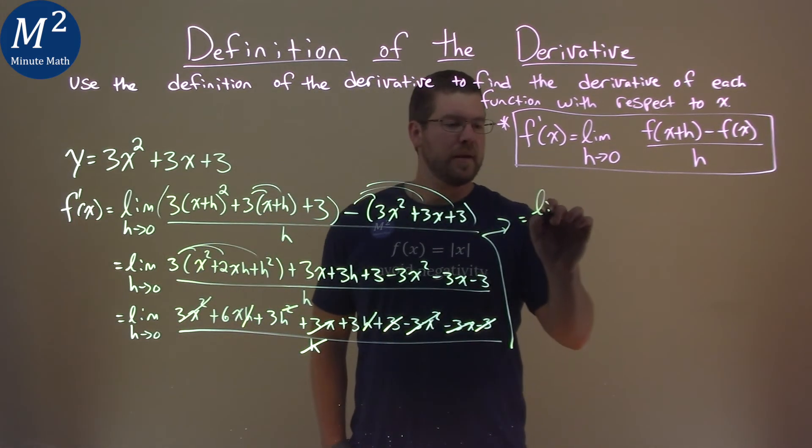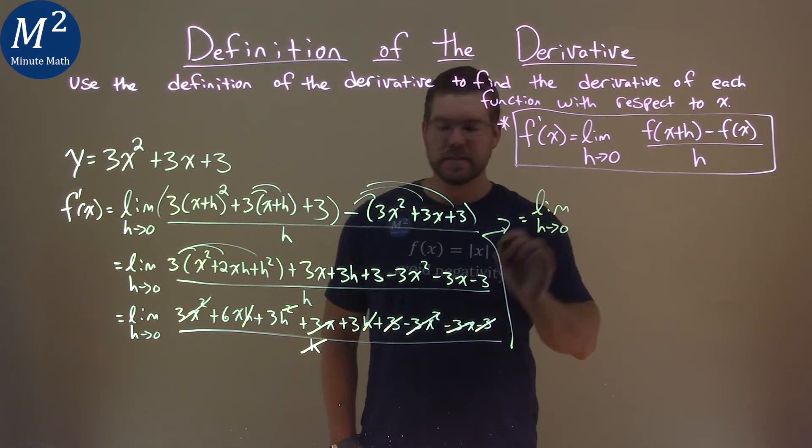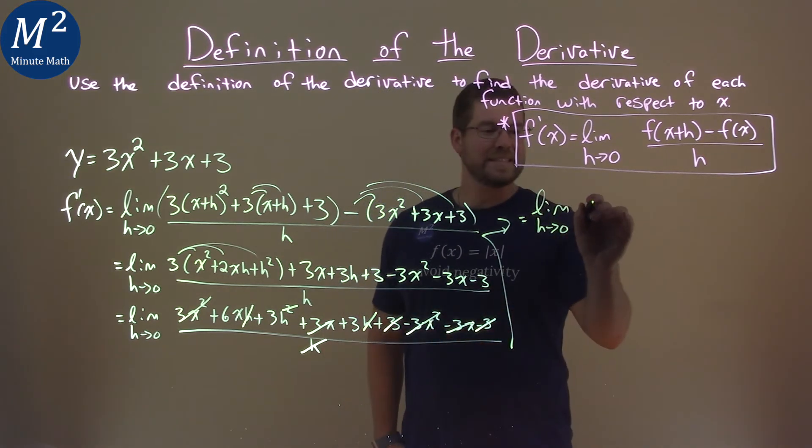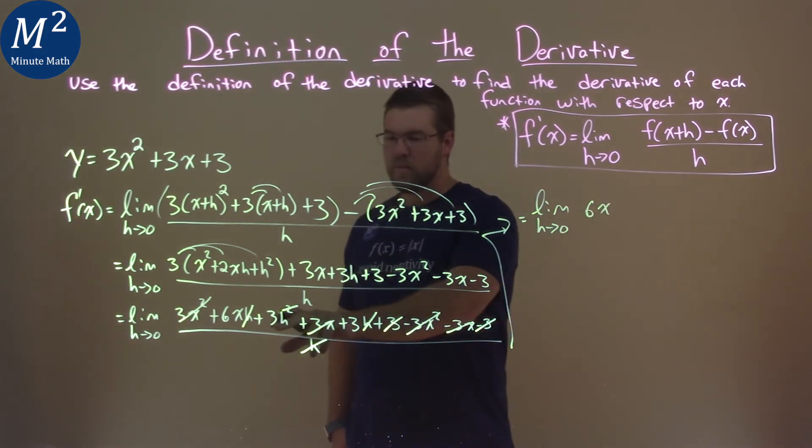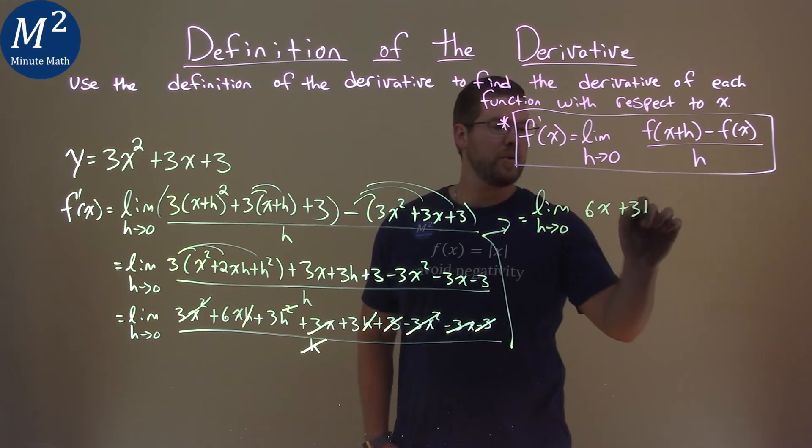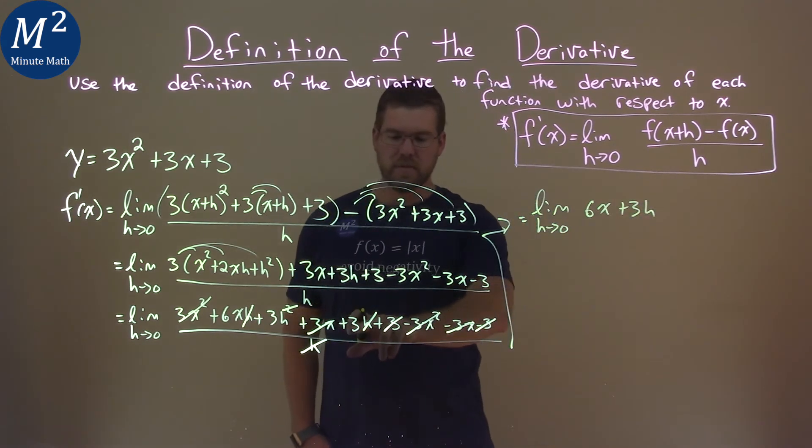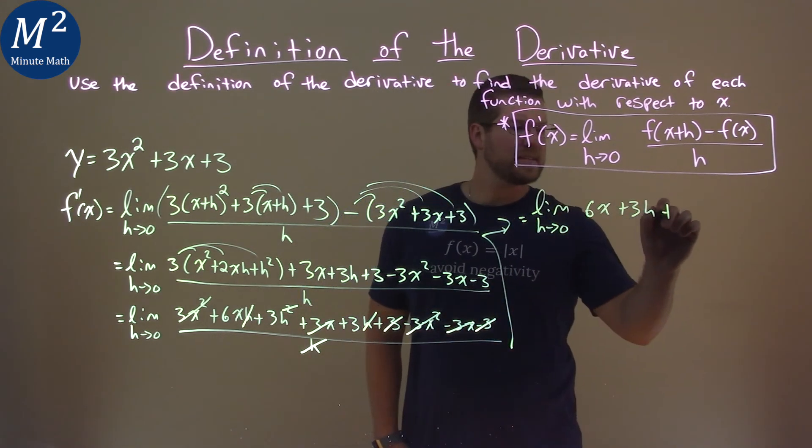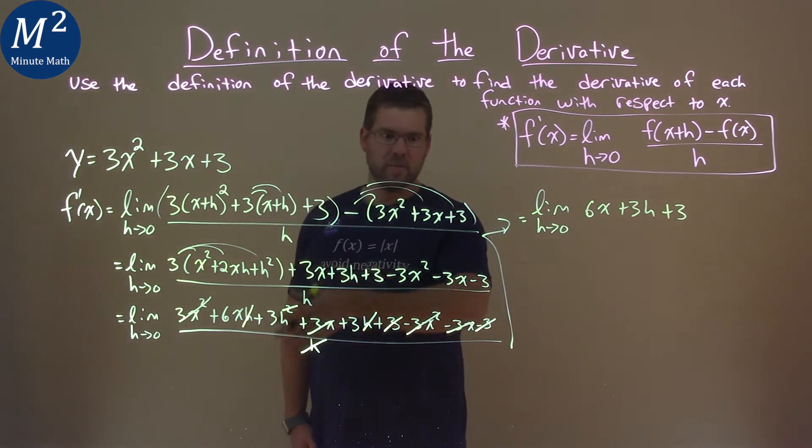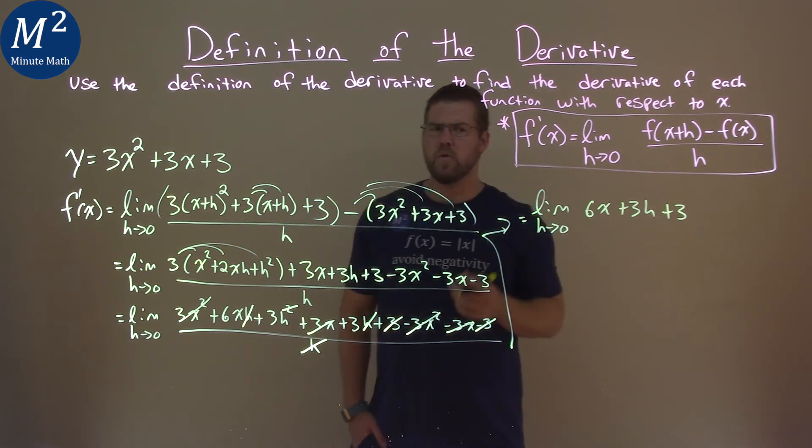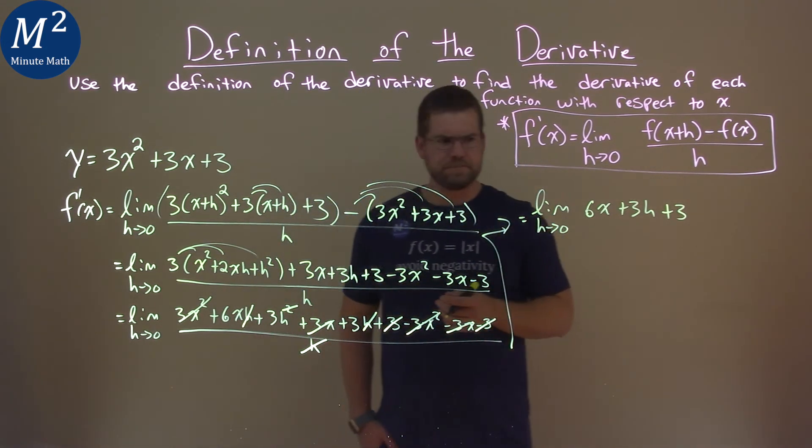We still have the limit—don't forget it—as h approaches 0 of 6x plus 3h plus that lonely 3. Now if that step is a little too much right now and you need to do one more step to rewrite it, go for it. And as you get better you get some practice here. Okay.